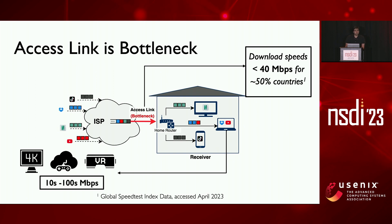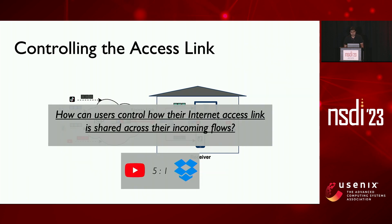So when a 4K video shares the 40 Mbps access link with a bulk download flow which tries to hog all the bandwidth, how do we ensure that we still get good video quality? This is the question our work explores: how can a user control how their access link is shared across their incoming flows? For the scenario I discussed, how can the user give a higher weightage to the video flow over the bulk download flow?